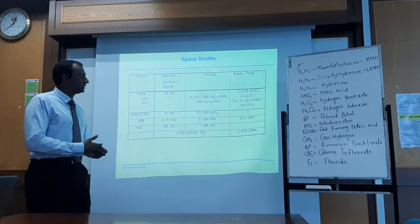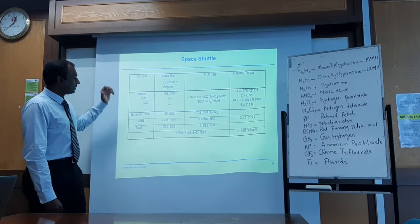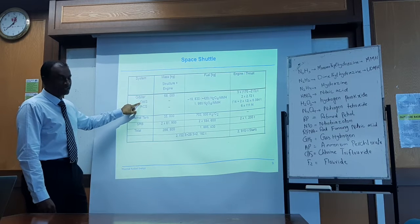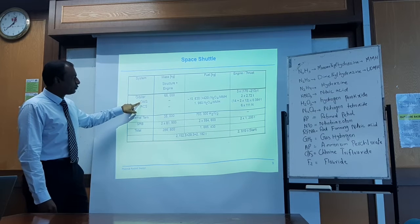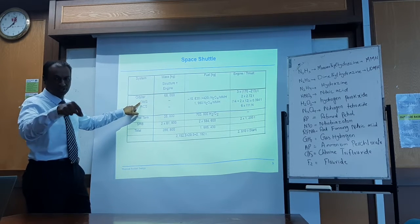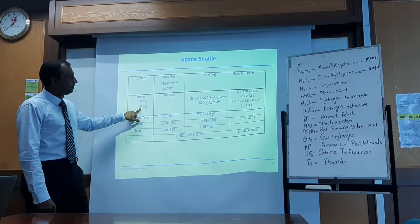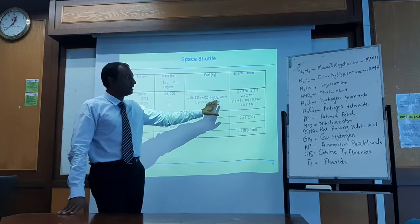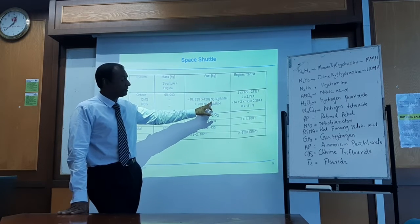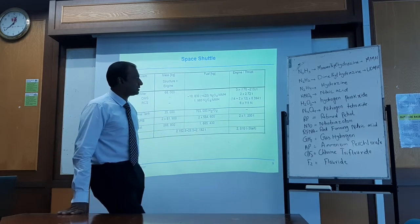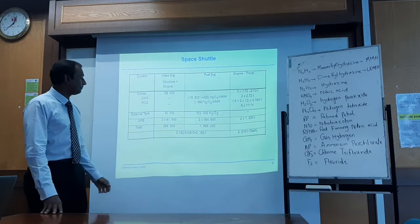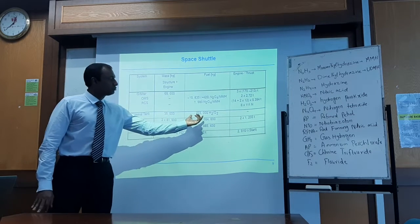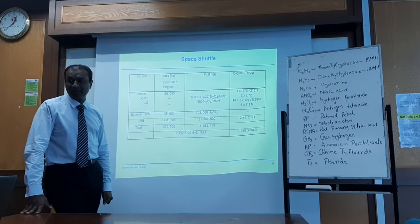Here is a typical example — the Space Shuttle system. You have the orbiter with the Orbit Maneuvering System (OMS) for orbit maneuvers — translational motion — and the Reaction Control System (RCS) for rotational motion. The fuel used is MMH with nitrogen tetroxide — very standard. Engine thrust varies by rocket engine type. There is also a large external brown tank providing liquid hydrogen and liquid oxygen.